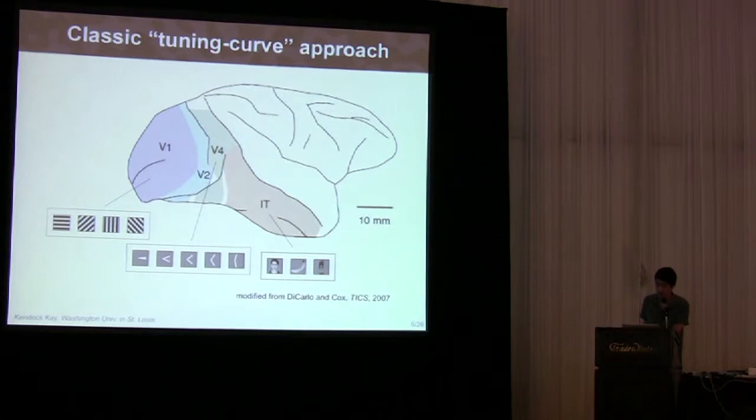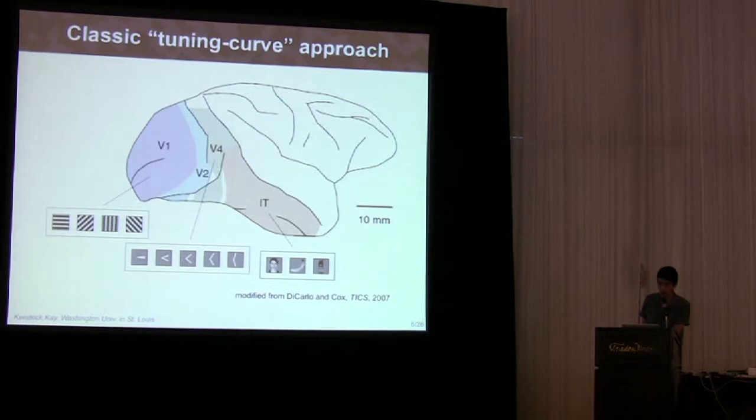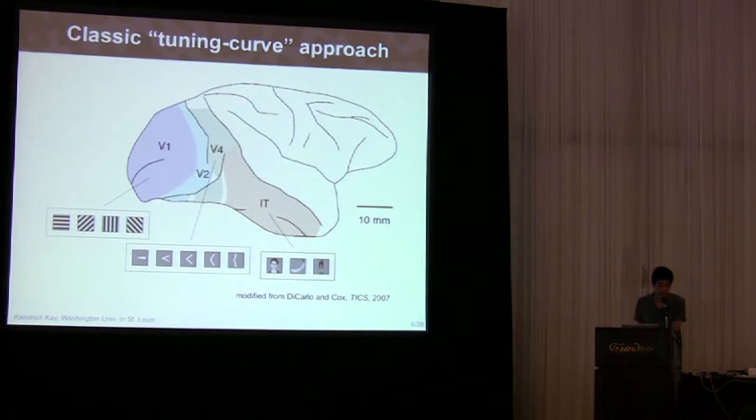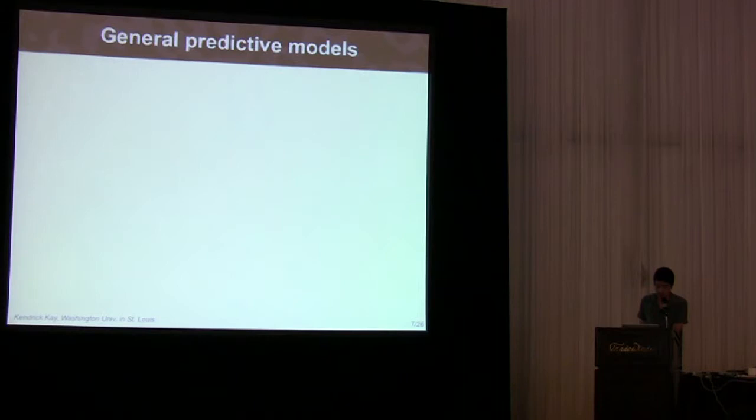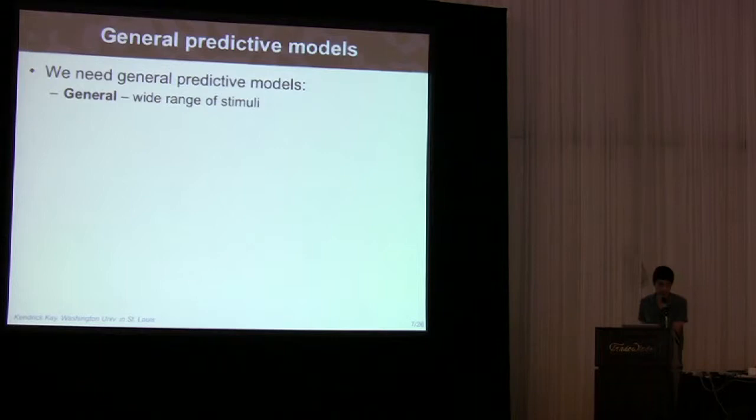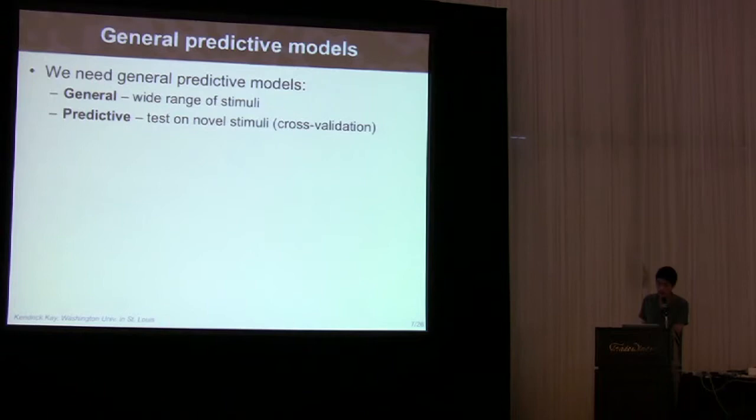A different approach, which I favor, and which probably the other speakers would also agree, is to sample a very wide range of stimuli and then come up with a general model that can potentially explain responses to all stimuli. The term I like to use for this is general predictive models. The term general emphasizes that these models should operate for a wide range of stimuli. And the term predictive emphasizes the importance of cross-validation. That is, we hold out some stimuli, train up our model, and then check the predictions on those held-out stimuli.